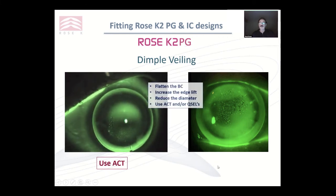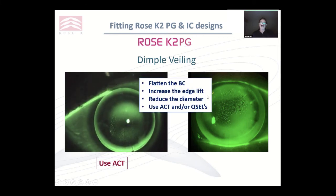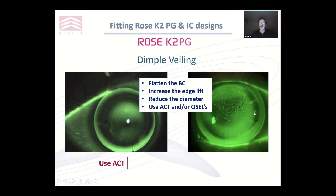What can we do to improve the situation? You can flatten the base curve a little bit — it will help increase the edge lift. Increasing the edge lift will often get rid of the bubbles. Make it smaller — when you go smaller, you reduce the back optic area, which reduces the pooling. And you have the option of using ACT or quadrant-specific edge lifts, where you can dial up a different edge lift in any of four quadrants.